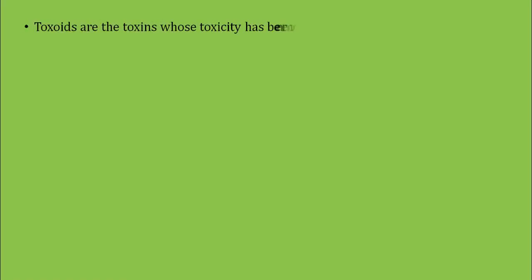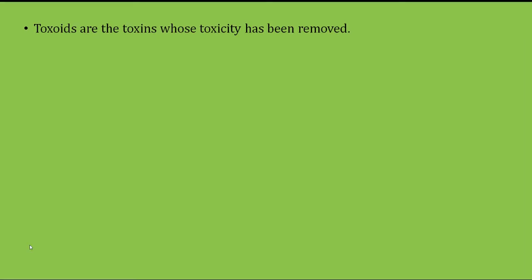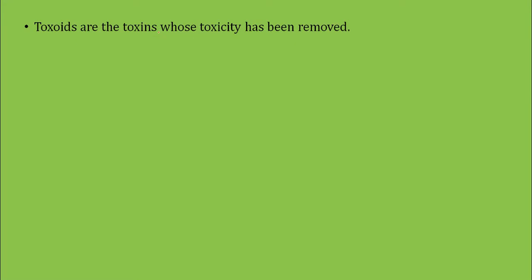What are toxoids? Toxoids are toxins whose toxicity has been removed. We know that toxins are poisonous substances. When we remove the poisonous property from the toxins, the resulting preparations are known as toxoids.